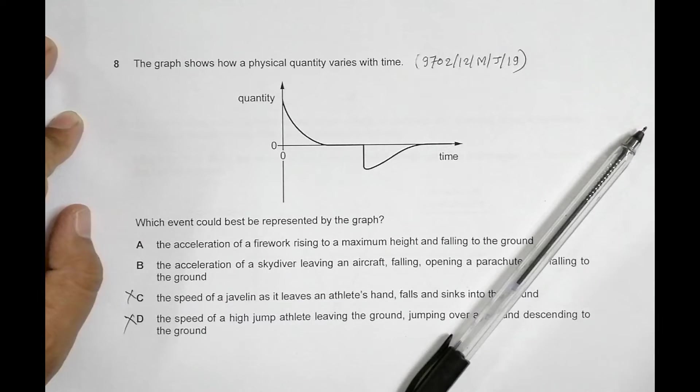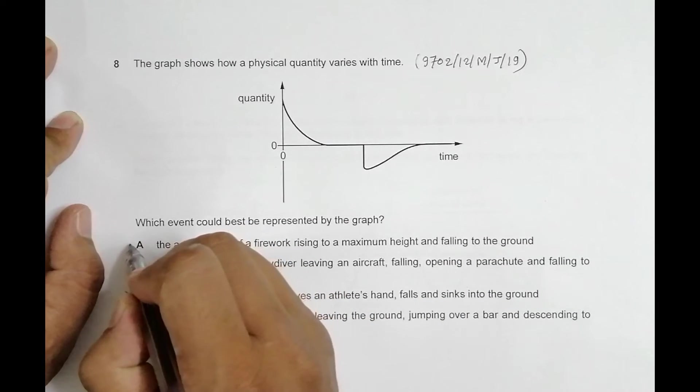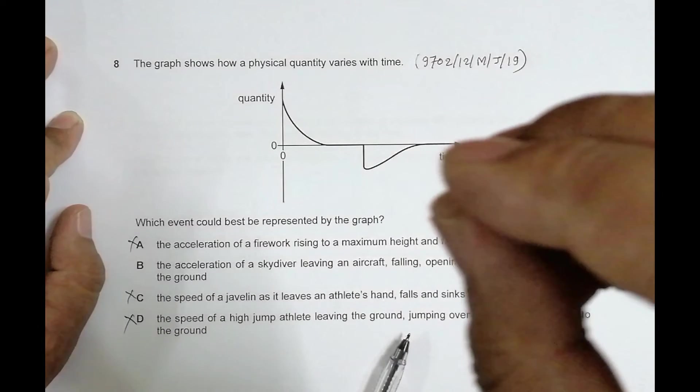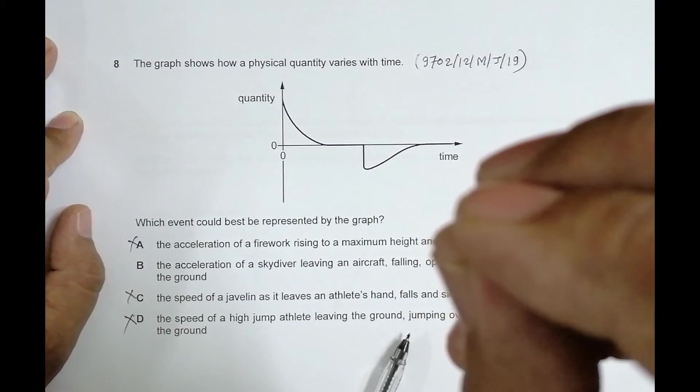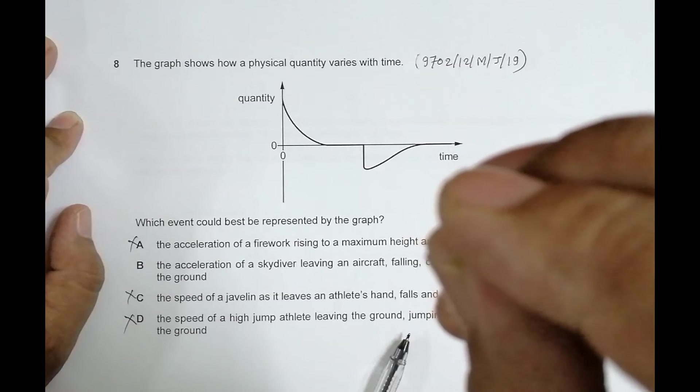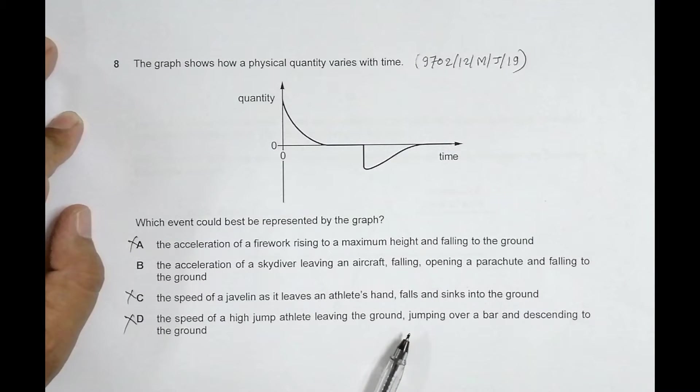In case of choice B, this is of a skydiver leaving an aircraft. When a skydiver jumps from the plane, initially the velocity increases, but later on, because of the opposing forces, the velocity increases but the rate will be lesser and lesser,